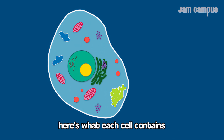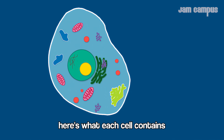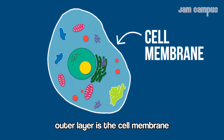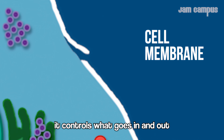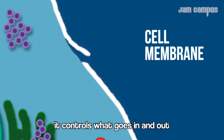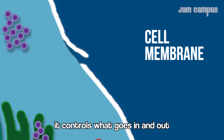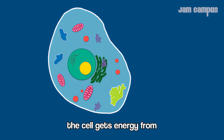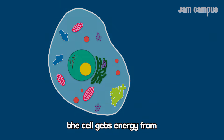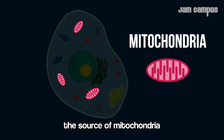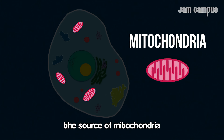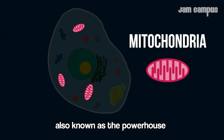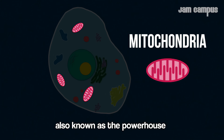Here's what each cell contains. The outer layer is the cell membrane — it controls what goes in and out. The cell gets energy from mitochondria, also known as the powerhouse of the cell.